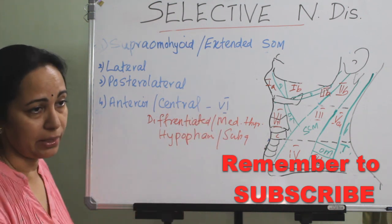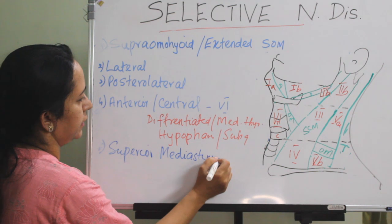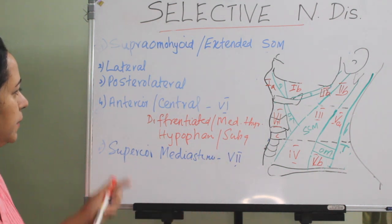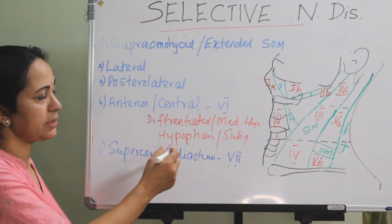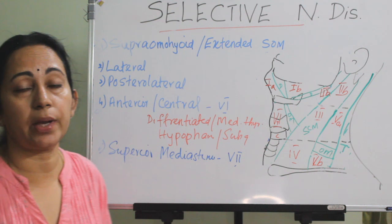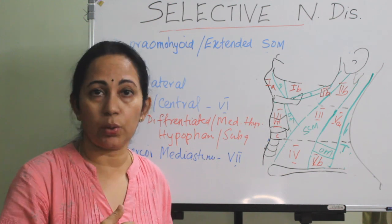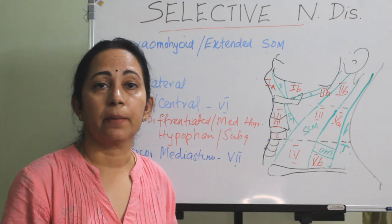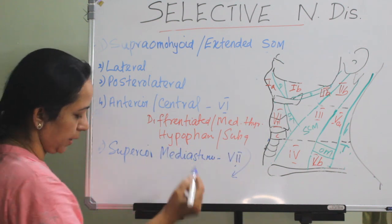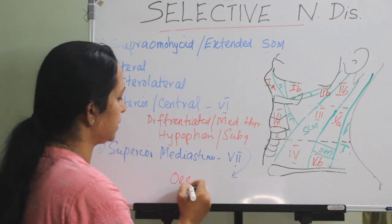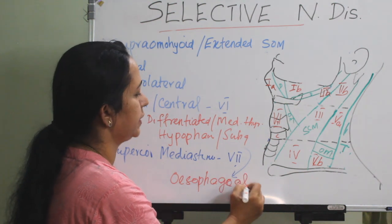Level 7 is the superior mediastinal group. Its indications are similar to the anterior/central compartment — differentiated and medullary carcinoma of thyroid, and tumors of hypopharynx or subglottis. Level 7 is removed when there is palpable or CT/MRI-confirmed involvement, along with level 6. Esophageal carcinoma is also an indication, but only if resectable.